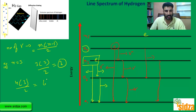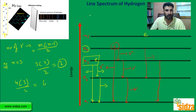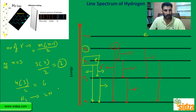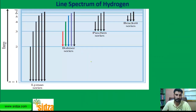In a hydrogen gas discharge tube, when we pass electric current, the H₂ molecule breaks down into hydrogen atoms and the electrons are excited to different energy levels. Those electrons, when present in different energy levels, emit different kinds of frequencies. We have just calculated how many possibilities there are for an electron present in a particular high energy orbit, and we classify these frequencies into different series.